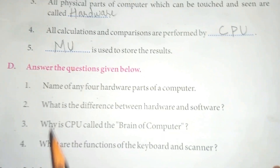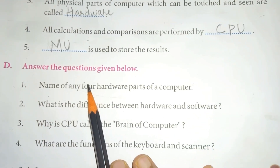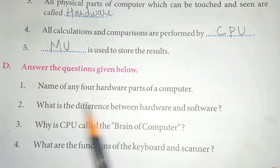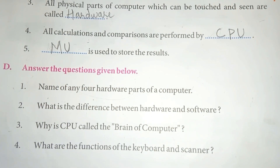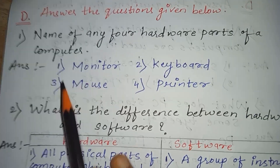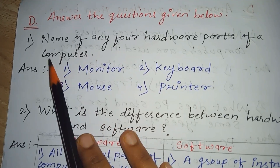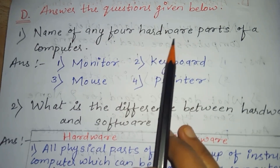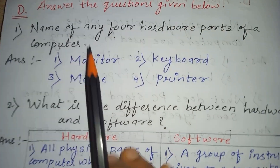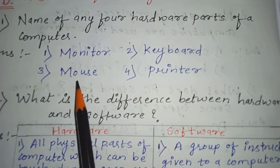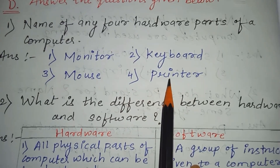Question number D. Answer the questions given below. Name any four hardware parts of the computer. The answer is: monitor, keyboard, mouse, printer.